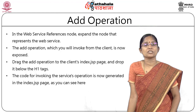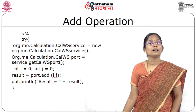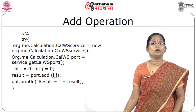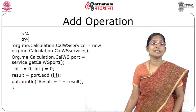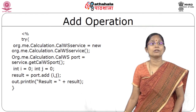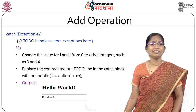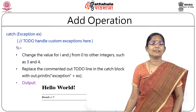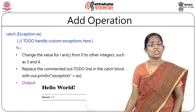The code for invoking the service operation is generated in index.jsp — similar to the Java client. A new service and port are created, and int result = port.add(i, j) computes the result. If you change i and j from 0 to 3 and 4, the result will be 7. Exception handling can also be added. This completes consuming the web service from a JSP client.